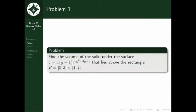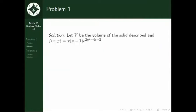For the first problem, we have: find the volume of the solid under the surface z equal to x multiplied by (y minus 1) multiplied by e raised to (2y squared minus 4y plus 2), that lies above the rectangle in this region. For the solution, we let v be the volume of the solid described and f(x,y) equal to x multiplied by (y minus 1) multiplied by e raised to (2y squared minus 4y plus 2).